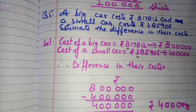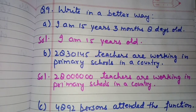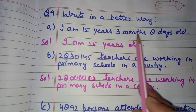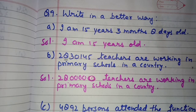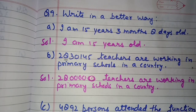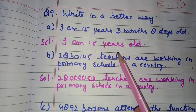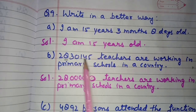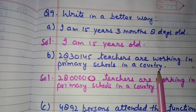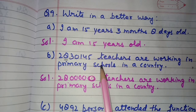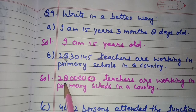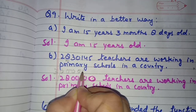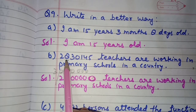Now some statements are given and we need to write them in a better estimated way. For example, 'I am 15 years 3 months 8 days old' — when someone asks your age, you say 'I am 15 years old' in an estimated way. Next: '2,83,145 teachers are working in primary schools in a country' — you can estimate and say '28 lakh teachers' or '30 lakh teachers', rounding off to the nearest lakh or ten-lakh.